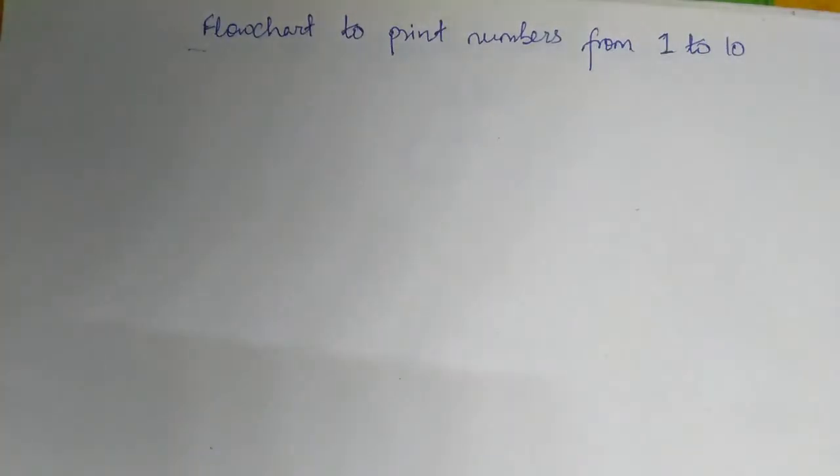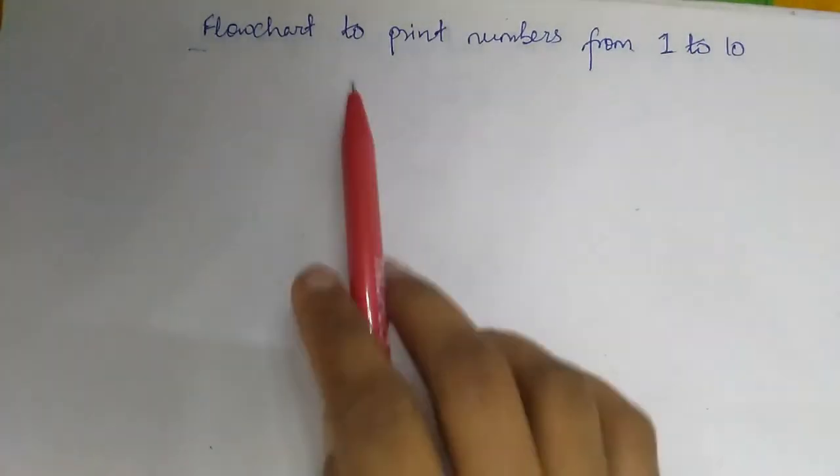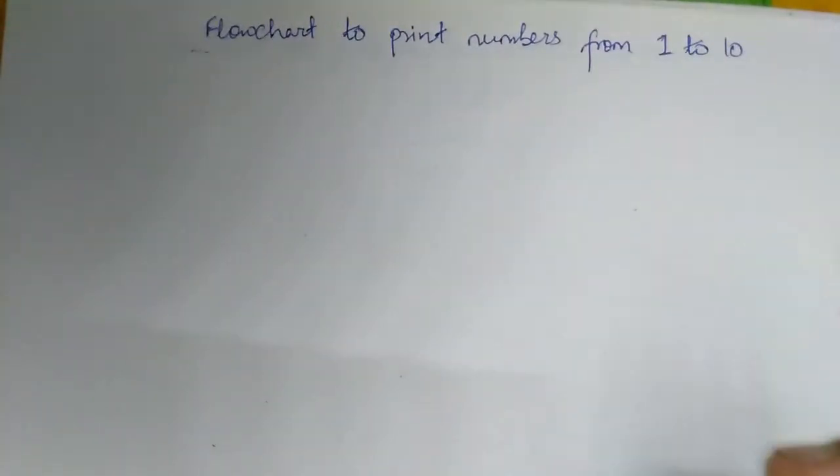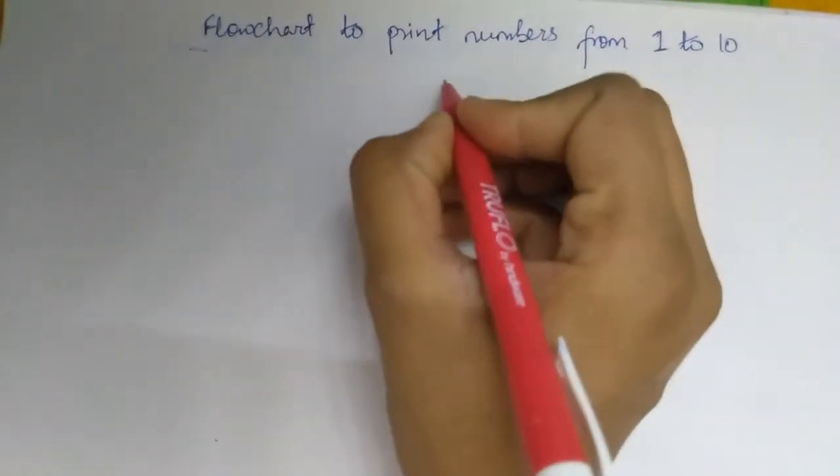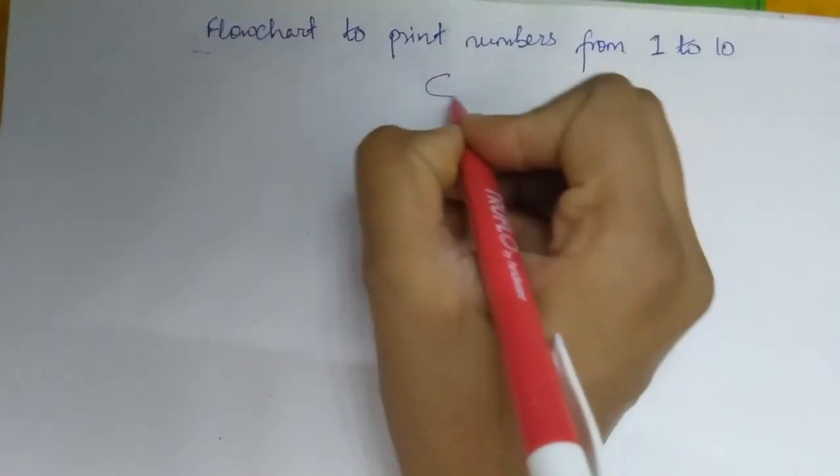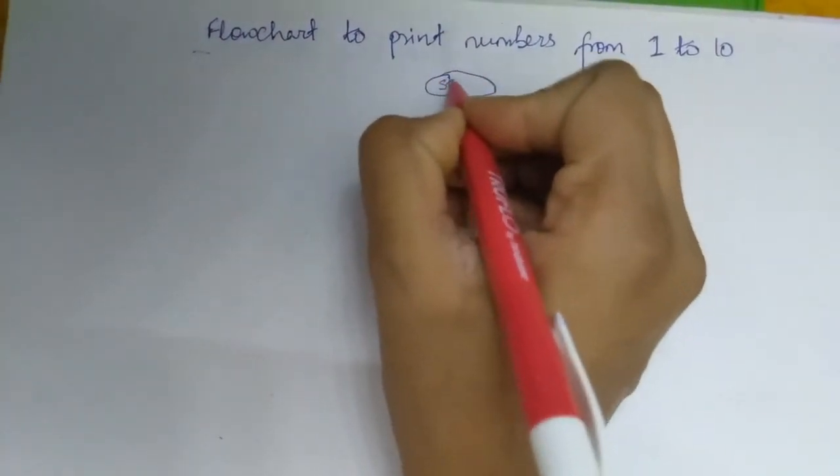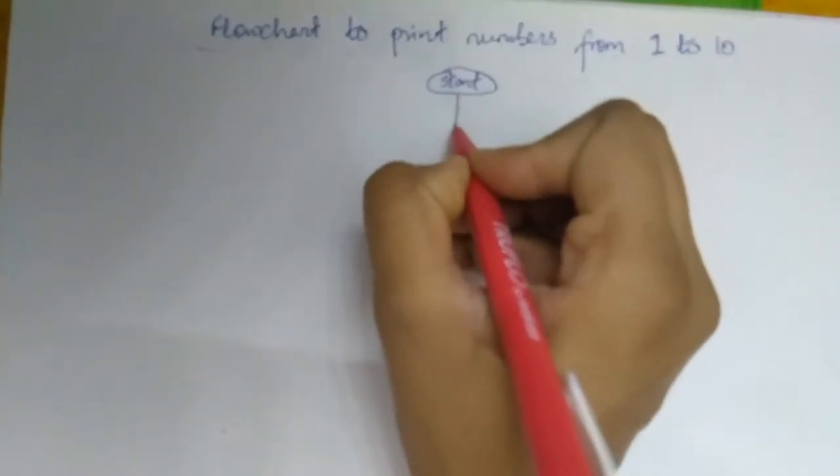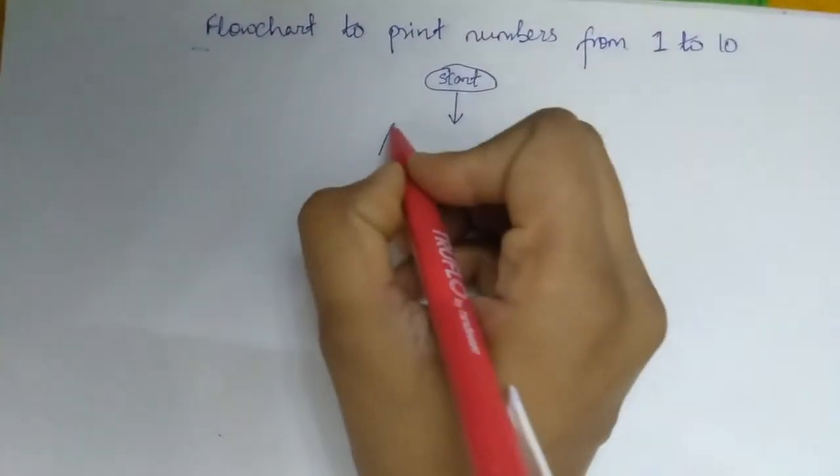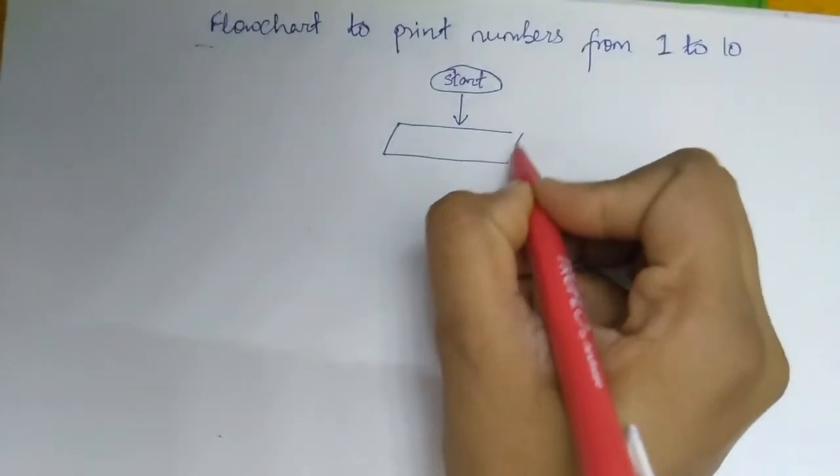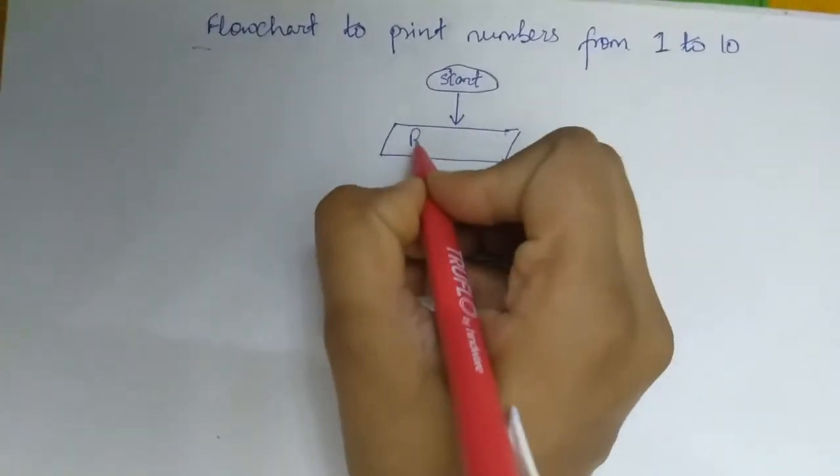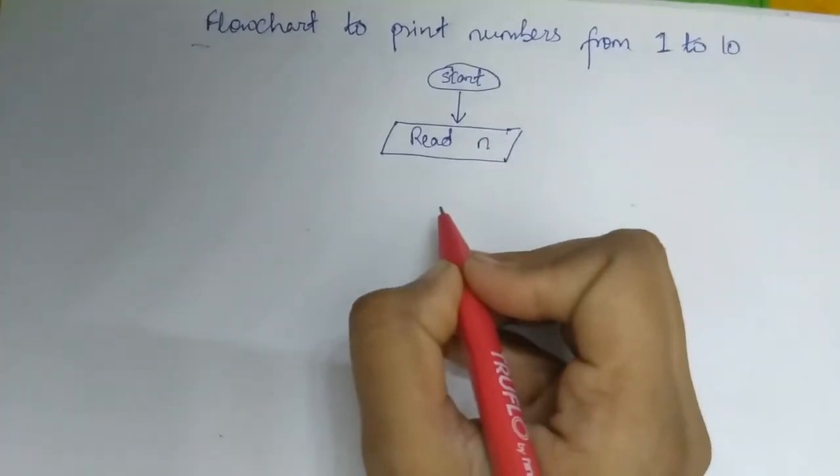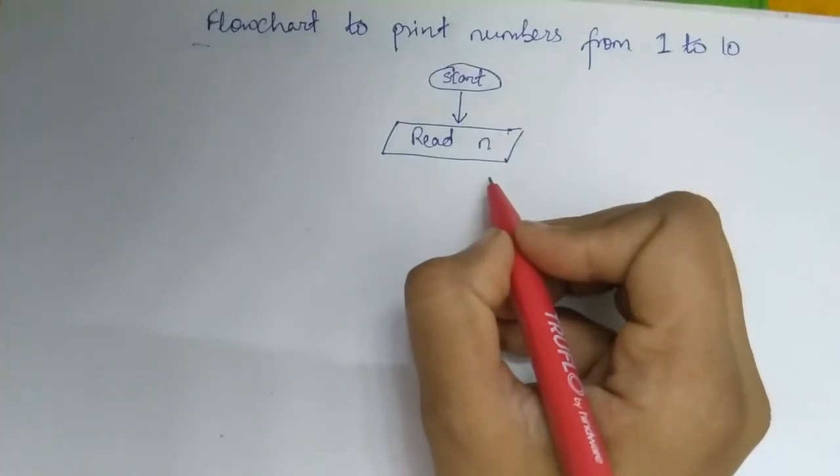Hello everyone, welcome back to my channel. In today's video we will learn about flowchart to print numbers from 1 to 10. So let's start. First we will create a start symbol of an oval shape. After that we will read the input as variable n. You can take any variable of your choice.